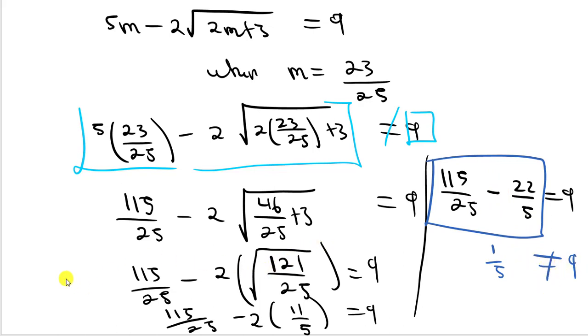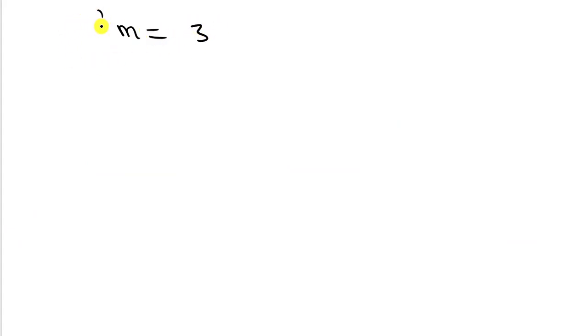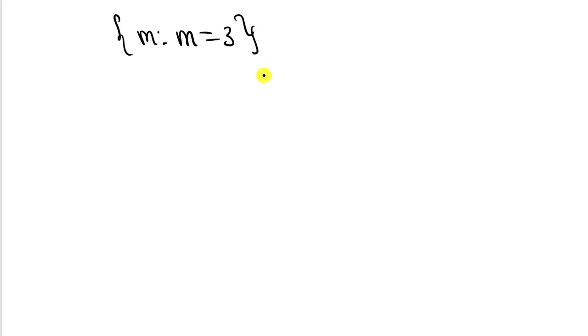Therefore, your final answer is m equals 3, since it was the only value satisfying the original equation. You can write it in set notation as {m : m equals 3}. Thanks for your time, and don't forget to subscribe. Bye-bye.